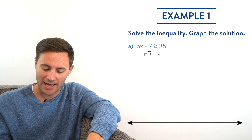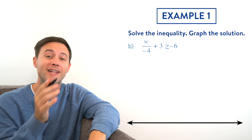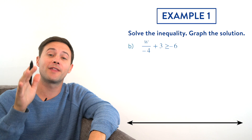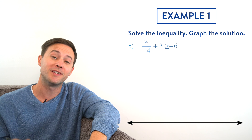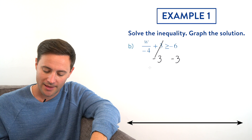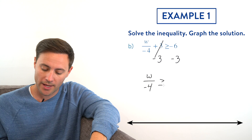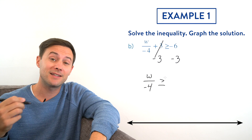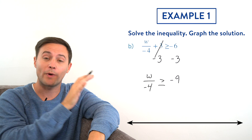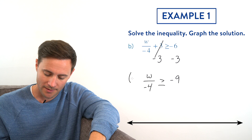We don't need to switch the inequality symbol because we just added a positive number to both sides — that's fine. Now we have to get that x alone. 6x means 6 times x, so to get rid of the multiplying by 6 we divide both sides by 6. We divided by a positive number so it's still going to be greater than or equal to. 42 divided by 6 gives us 7. So x is greater than or equal to 7. Now let's graph: at 7 we put a closed circle and an arrow going to the right.